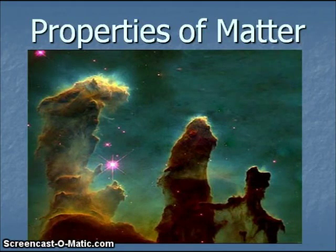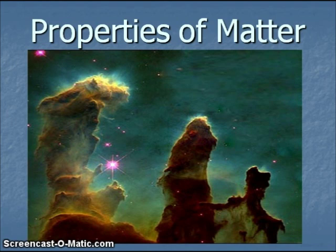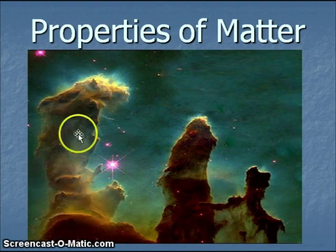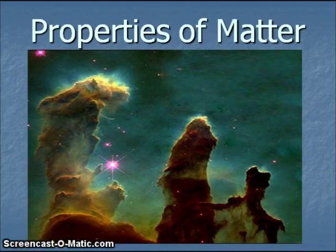Hello, everyone. Today's lecture is Properties of Matter. The image on the title slide shows the Eagle Nebula. This is an image taken by the Hubble Telescope. The Eagle Nebula is located approximately 7,000 light years from Earth, and in the image we see gas and dust which are in the process of forming new stars. This image is commonly called the Pillars of Creation.